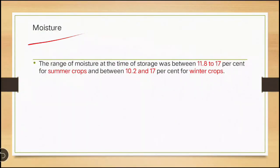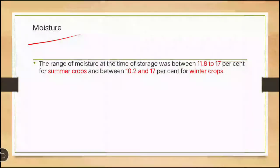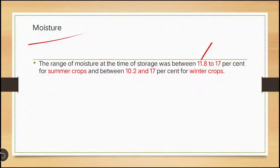Next we will see moisture. The range of moisture at the time of storage should be between 11.8 to 17 percent for summer crops and 10 to 17 percent during winter crops.